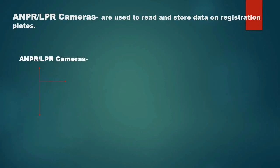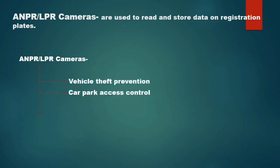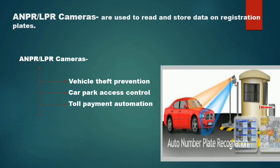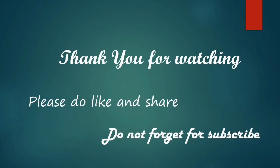The last camera is the LPR camera. LPR cameras are mainly used to read and store vehicle registration plate numbers. They are used for prevention of vehicle theft, car park access control — if you want to access a car park, this camera scans the plate number and grants permission for the car to park if it has been registered. It is also used for toll payment and auto identification. That brings us to the end of this tutorial — please hit the subscription button, and thank you, see you next time.